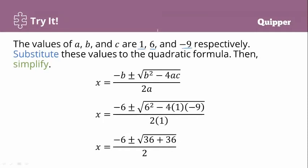Substitute the values into the formula. We have negative 6 plus or minus the square root of (6 squared minus 4 times 1 times negative 9), all divided by 2 times 1. Simplify: 6 squared is 36. Then negative 4 times 1 times negative 9: negative 4 times negative 9 is positive 36.